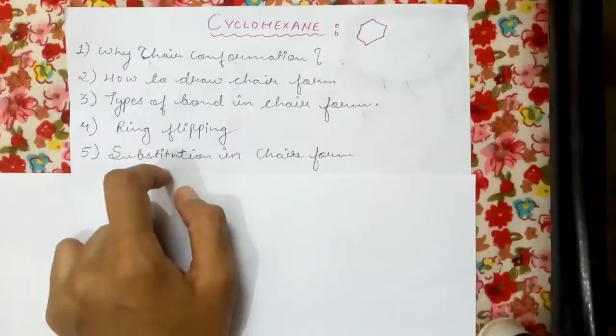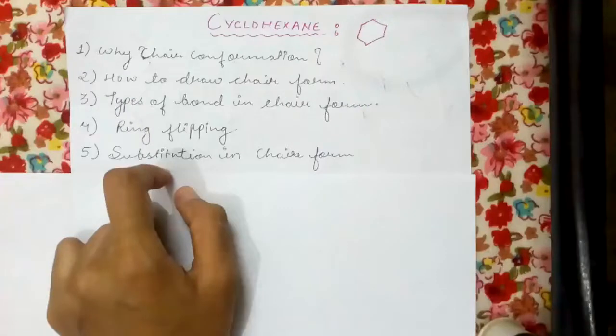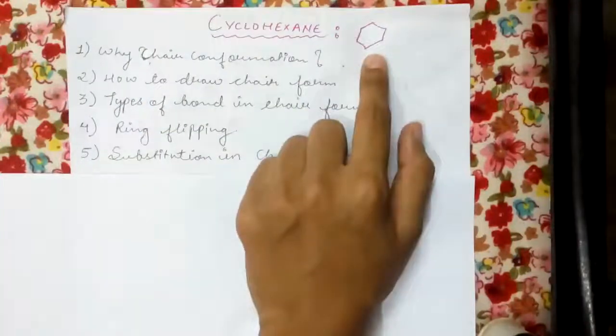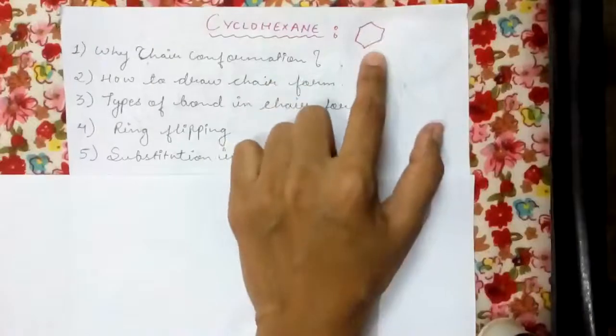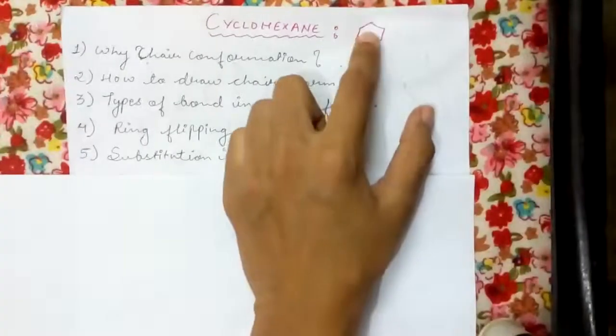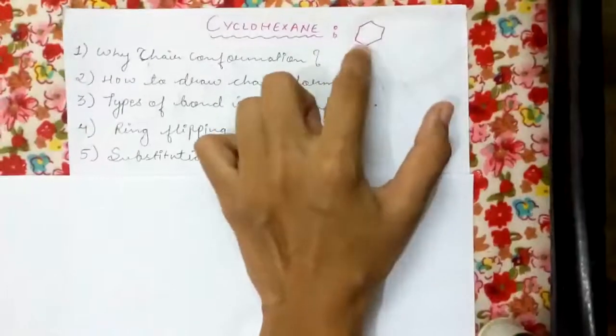Why does cyclohexane exist in chair form? We should wonder about it. The main reason is to get stability. Why does it need to get stability? Why does it not exist in this planar form? It does exist in this form also, but in this form it is planar.